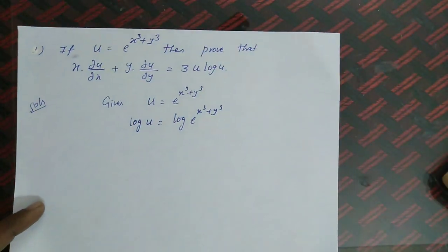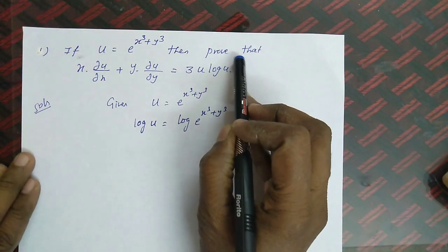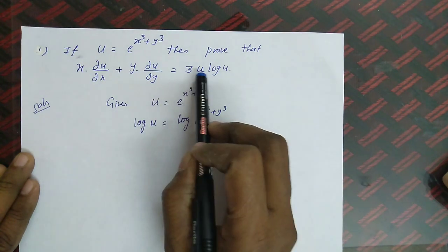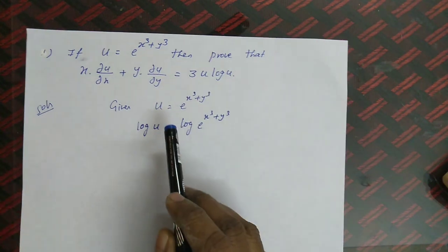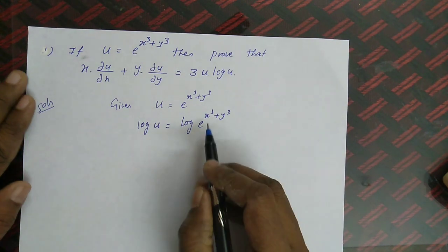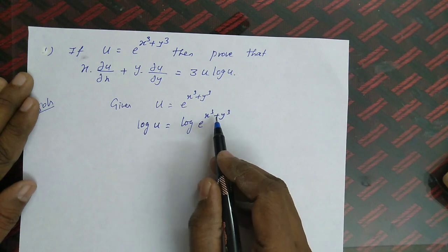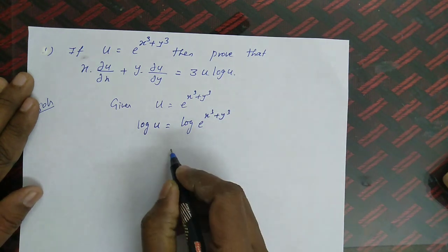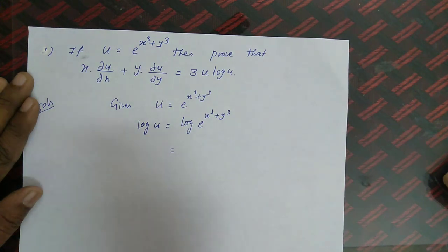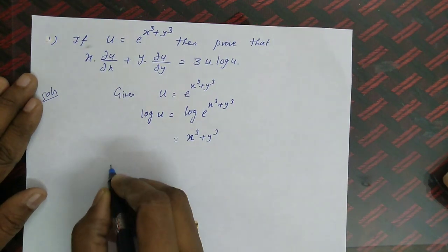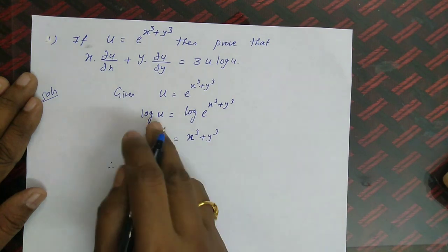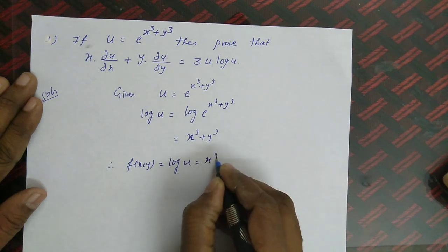Now we look at problems based on homogeneity and Euler's theorem. The first question: if u = e^(x³+y³), prove that x · ∂u/∂x + y · ∂u/∂y = 3u · log u. We take the given u = e^(x³+y³). Taking logarithm on both sides and using log(e^x) = x, we get log u = x³ + y³. So our f(x, y) = log u = x³ + y³.